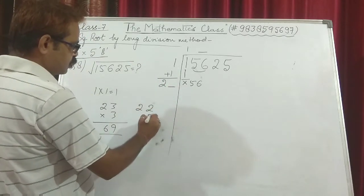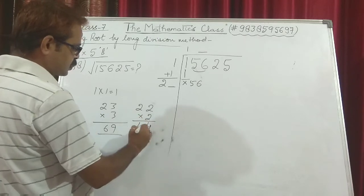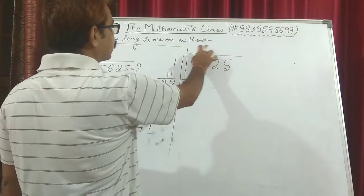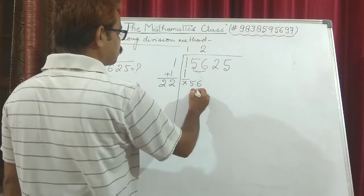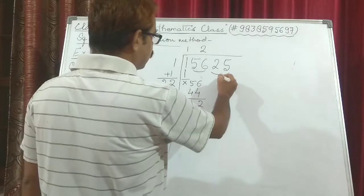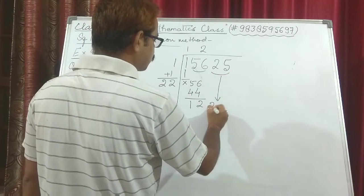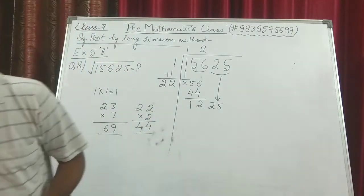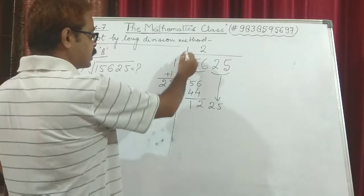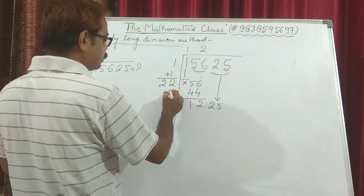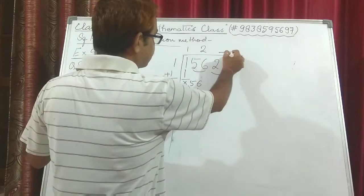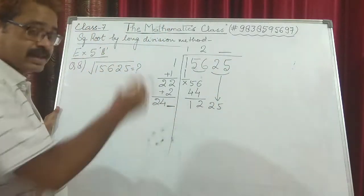Using 2 in both places: 2 times 2 is 4 and 2 times 2 is 4, so 22 times 2 is 44. What is left: 6 minus 4 is 2, and 5 minus 4 is 1, giving remainder 12. We carry down the whole next pair, which is 25. So the new number is 1225. This 2 is added to this 2 again, giving 24. We need a number such that 24-something times that same something gives 1225 or less.